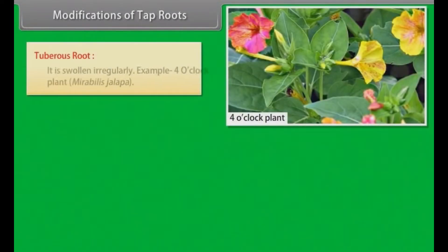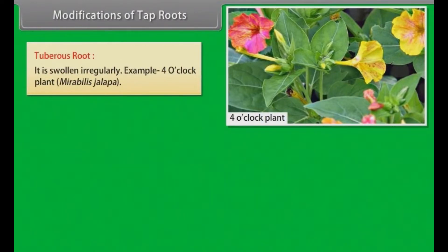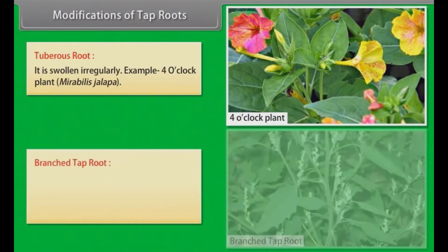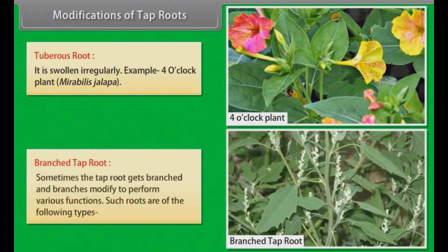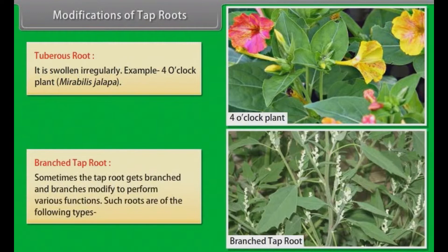Tuberous root: It is swollen irregularly. Example: four o'clock plant (Mirabilis jalapa). Branched tap root: Sometimes the tap root gets branched and branches modify to perform various functions.